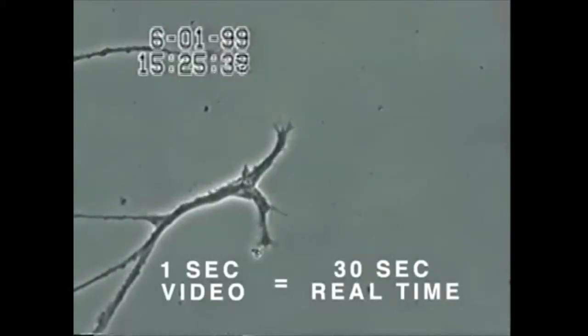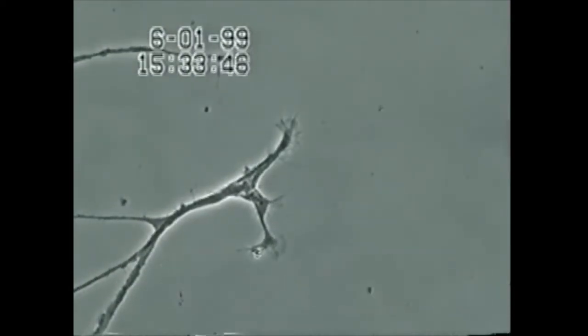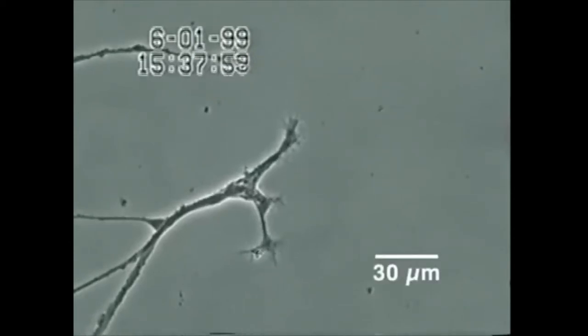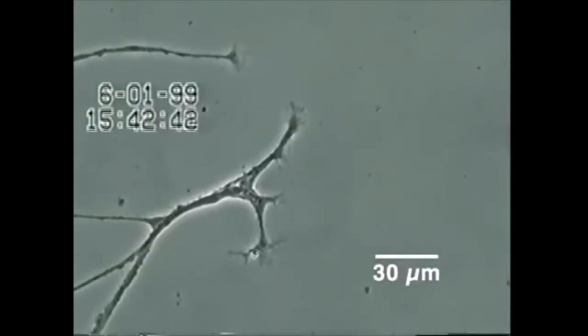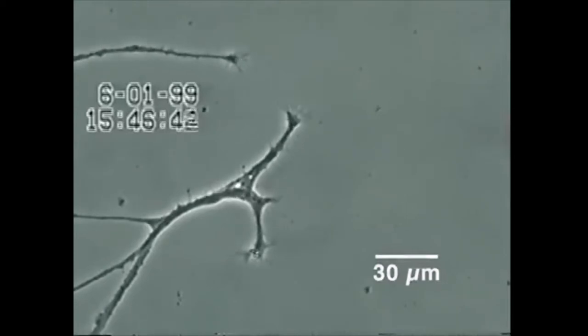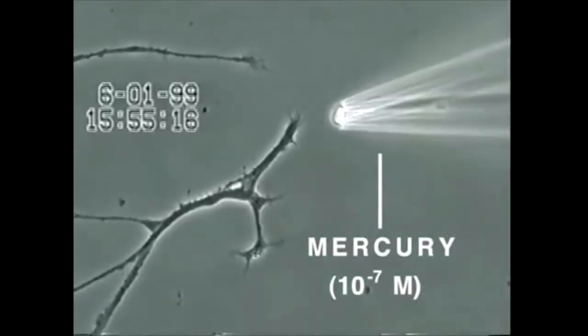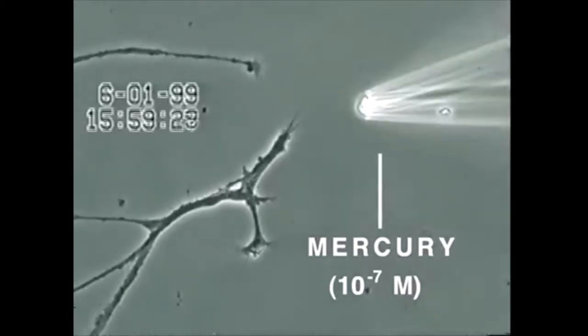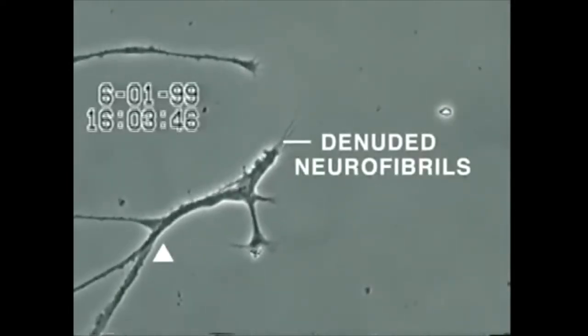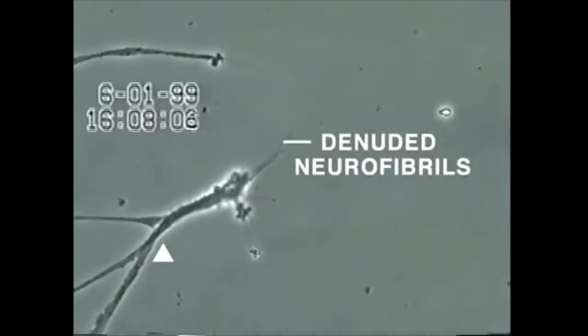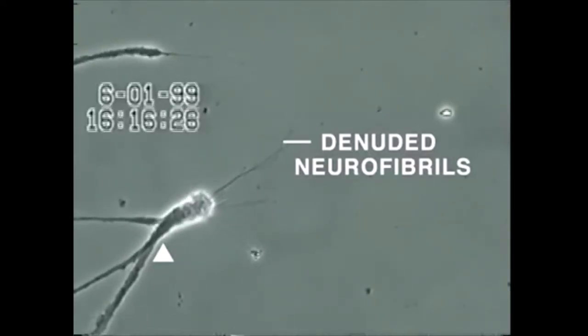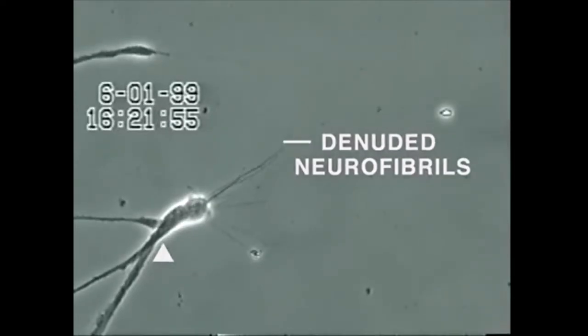In this experiment, neurons also isolated from snail brain tissue were grown in culture for several days, after which very low concentrations of mercury were added to the culture medium for 20 minutes. Over the next 30 minutes, the neurite membrane underwent rapid degeneration, leaving behind the denuded neurofibrils seen here. In contrast, other heavy metals added at this same concentration, such as aluminum, lead, cadmium, and manganese, did not produce this effect.